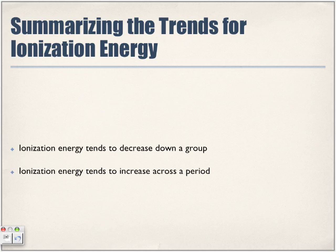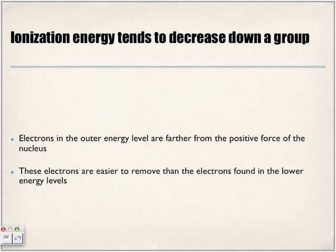Summarizing the trends for ionization energy: ionization energy tends to decrease down a group. Electrons in the outer energy level are farther from the positive force of the nucleus. If the atomic radius is greater, there is less pull on that outermost valence electron because it is further away from the nucleus. So these electrons are easier to remove than electrons found in lower energy levels, which are closer to the nucleus.